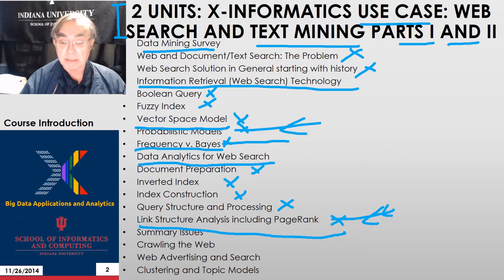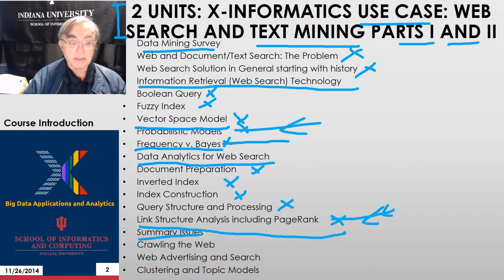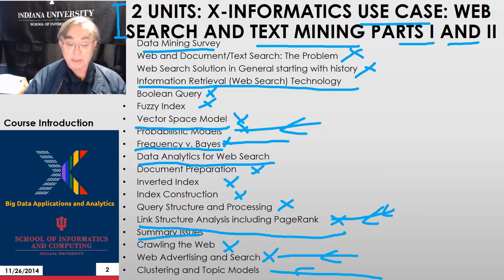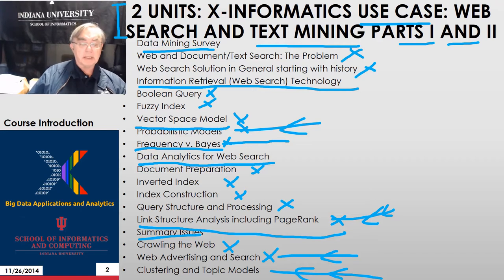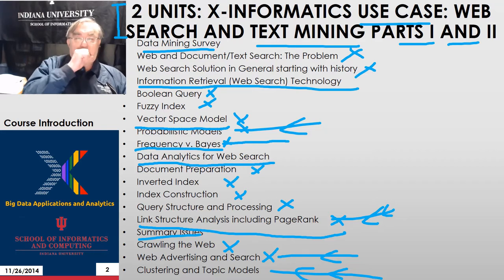That's where PageRank comes from — it was one of the founding principles of Google when it was set up. This summarizes the whole area of web search and discusses how to build a search engine, including crawling the web. We have a bit of discussion of web advertising. We return to clustering and topic models, where instead of clustering people, you cluster items together to find which items are near each other and which people might like. In web search, you cluster news items by their common content.